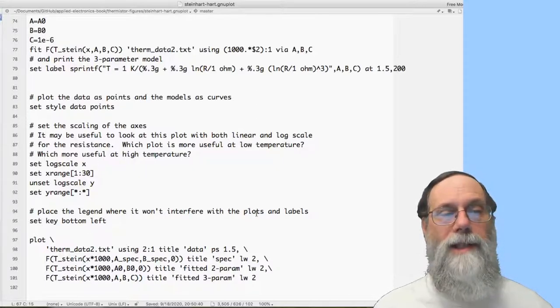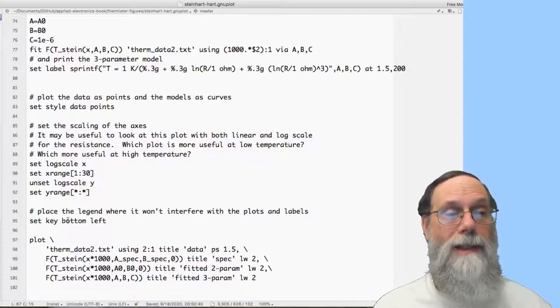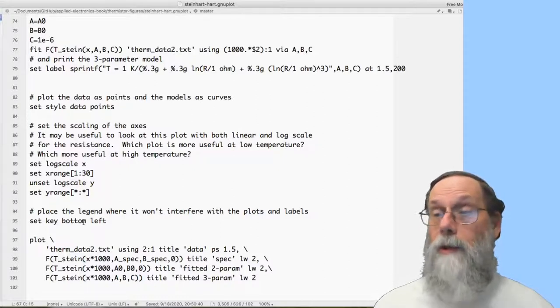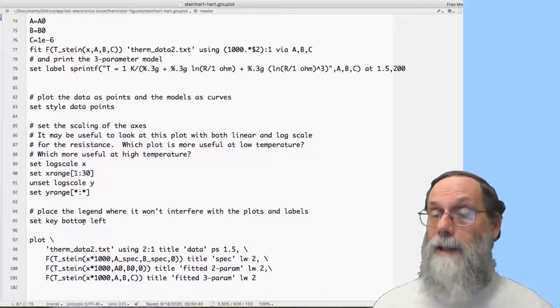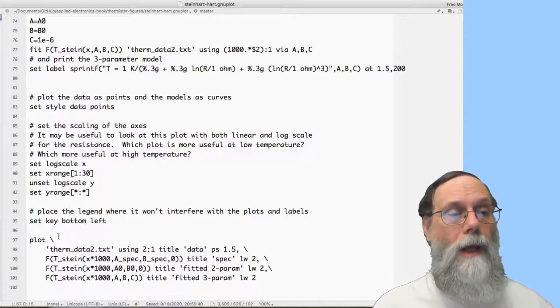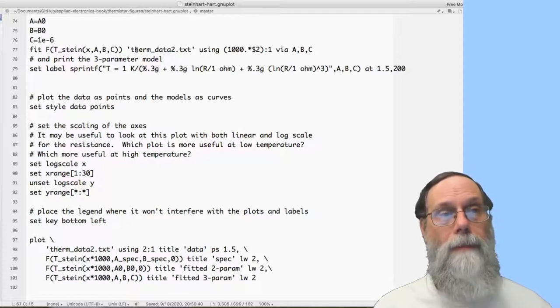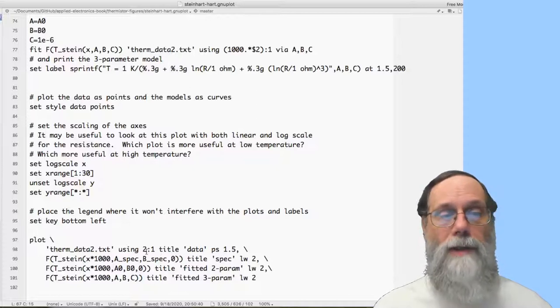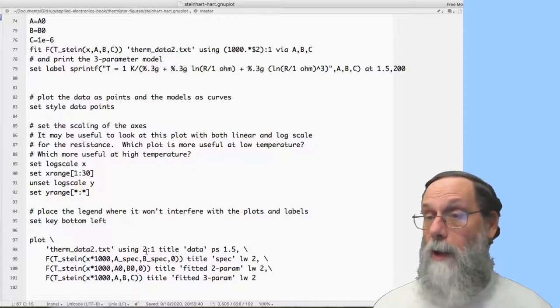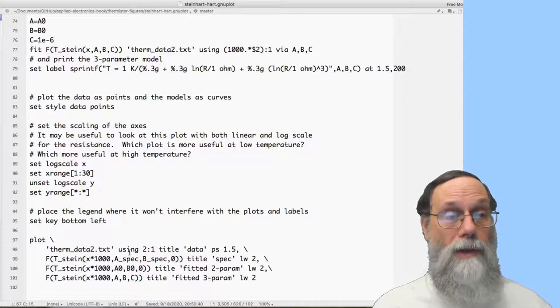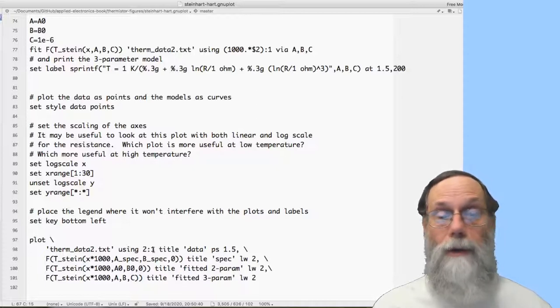And then I want to place the legend somewhere where it won't interfere with all the plots and labels. Here I said, set the key at the bottom left. And again, I didn't start out with that. I just let it fall where it may. And then I look to say, well, where's there a good place for this, now that I've seen the curves in the data? And then I've got a plot command. And here I'm going to plot first the data. And again, it looks a lot like what we did with the fitting up here, except for I'm not rescaling this, because I'm plotting this thing with kilo-ohms on the x-axis. And so I'm just saying, using column 2 colon column 1.